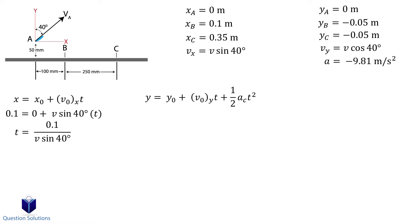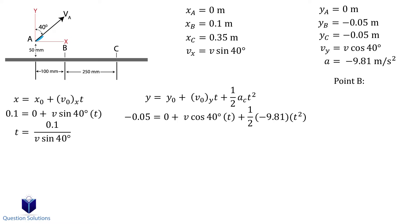For the vertical motion at point B, we will use this equation, and as before, we will substitute what we know in. We now have two equations with two unknowns, so we can solve them. That gives us the time the water takes to reach point B, and also the speed required to reach point B.